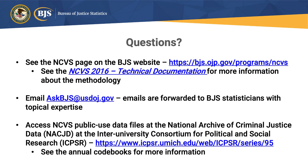In closing, if there are further questions, please see the NCVS page on the BJS website. NCVS technical documentation is also available with more information about the methodology, specifically the weights included on the data files. You're welcome to email askbjs@usdoj.gov with additional questions — those emails are forwarded to BJS statisticians with topical expertise, so make sure to mention the NCVS. The NCVS public use data files are available at the National Archive of Criminal Justice Data, and the annual codebooks contain much more information on the NCVS and its methodology.